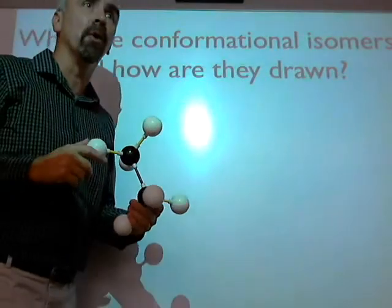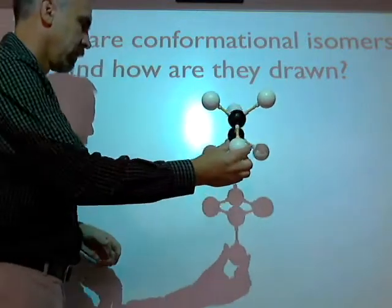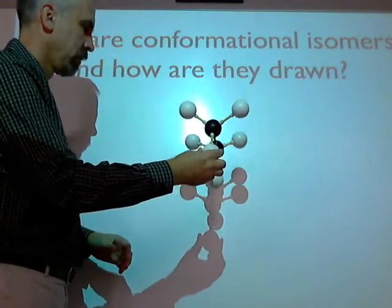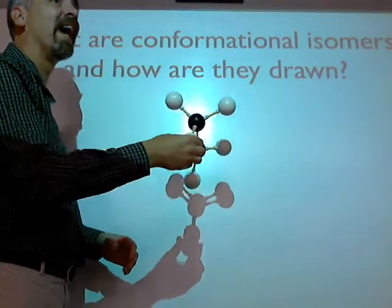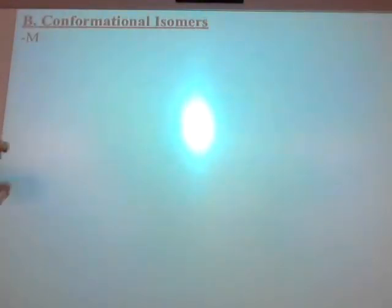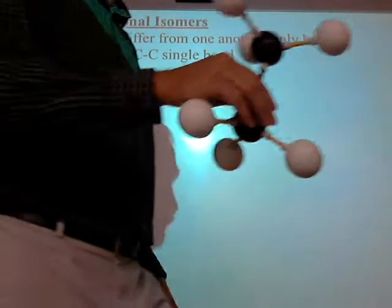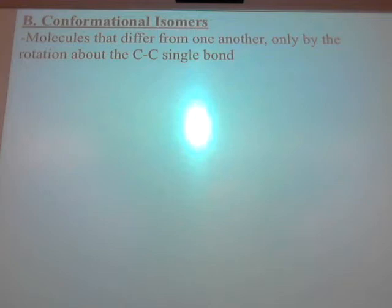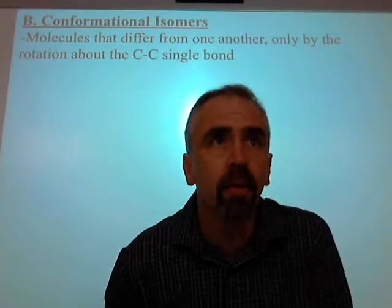Let me show you. Look at the shadow. You just turn the shadow — see the shadow? Those are called conformational isomers. They differ only by their rotation about a carbon-carbon single bond. So I can actually rotate one into the other. I can't do that with structural isomers — I can't rotate 2-methylbutane into pentane. They're totally different compounds with different properties.